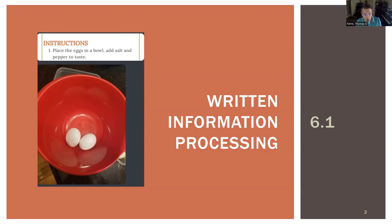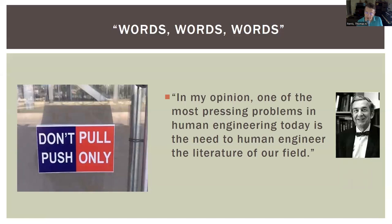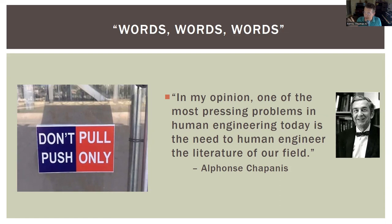Starting with 6.1, written information processing. I like to start by giving a nod to one of my favorite forefathers of the human factors world — Alphonse Chapanis. He gave a very famous keynote address as president of the Human Factors and Ergonomics Society. The article is called 'Words, Words, Words.' In it, he says: 'In my opinion, one of the most pressing problems in human engineering today' — this was 1965, but still applies — 'is the need to human-engineer the literature of our field.'